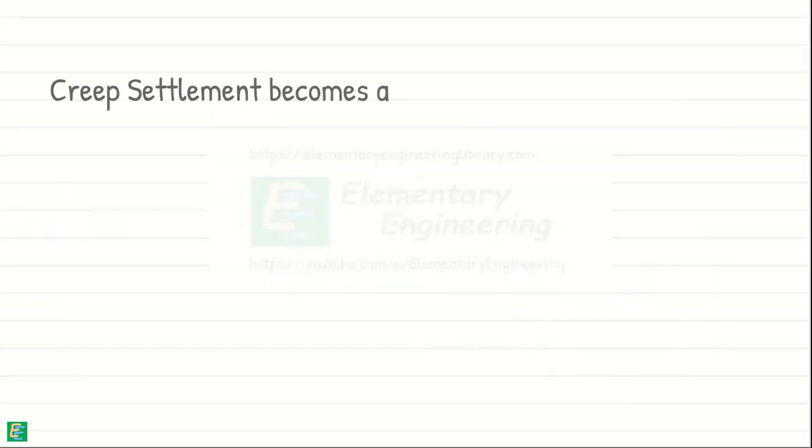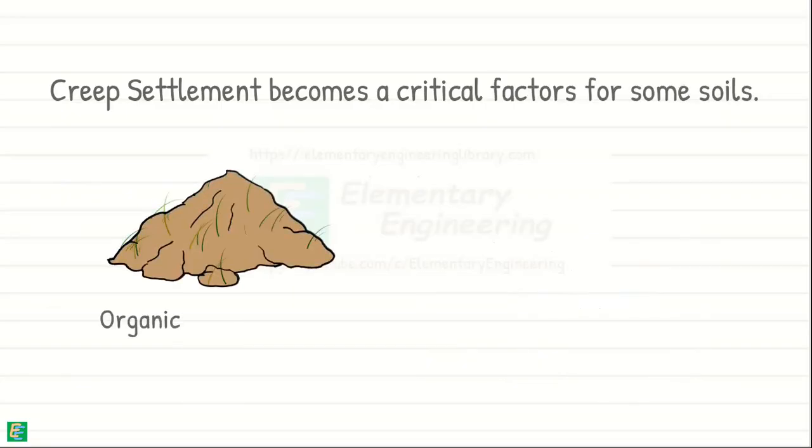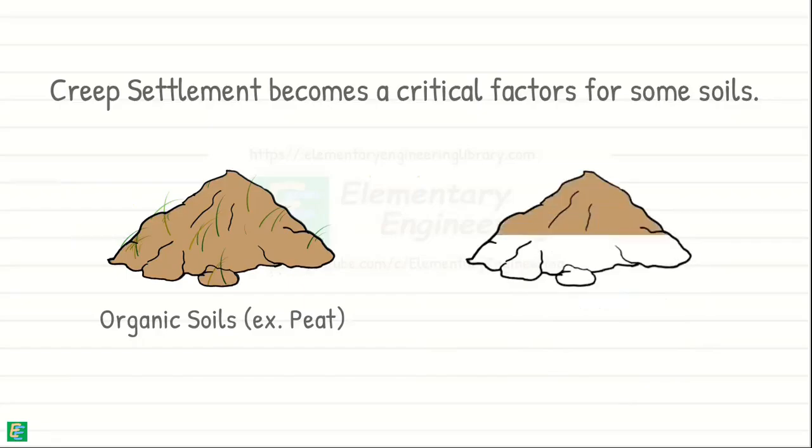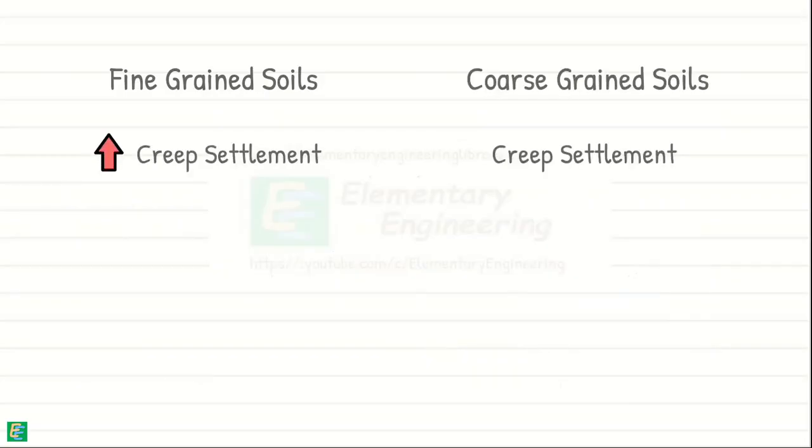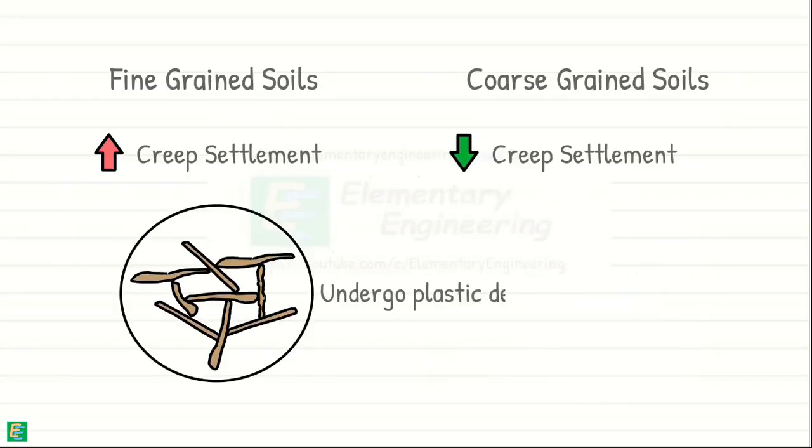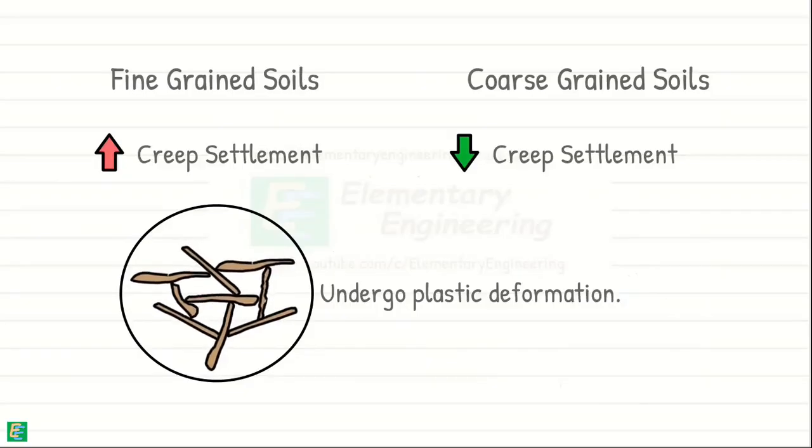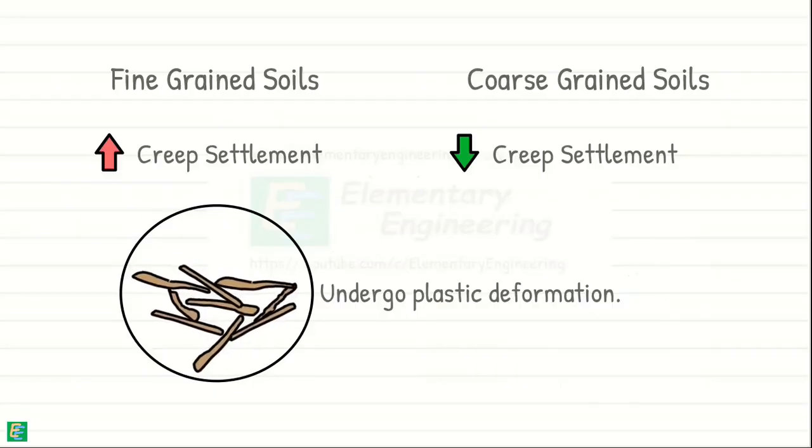Creep settlement becomes a critical factor for certain soil types, particularly organic soils like peat. In most inorganic soils, creep settlement is less significant compared to organic soils. However, fine-grained clay soils are more prone to creep settlement compared to coarse-grained sands. This is because clay particles are more susceptible to plastic deformation and rearrangement under constant stress, leading to ongoing settlement over time.